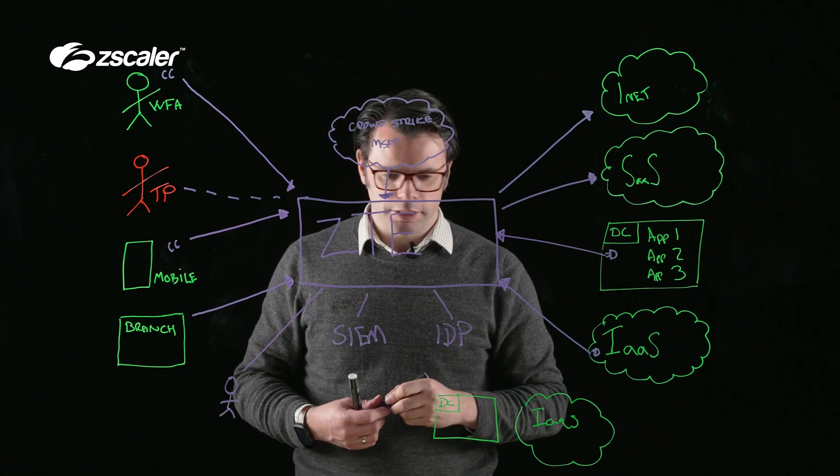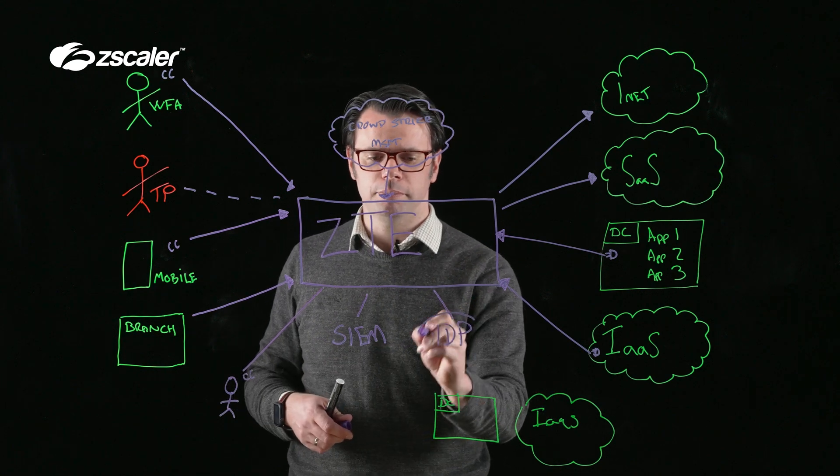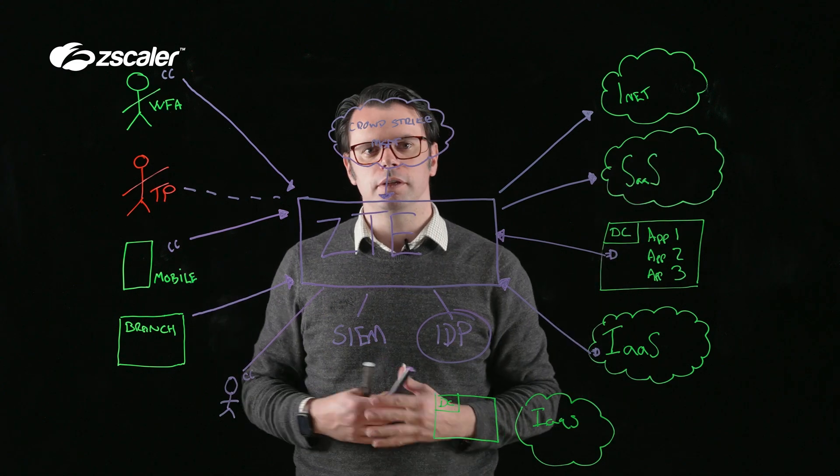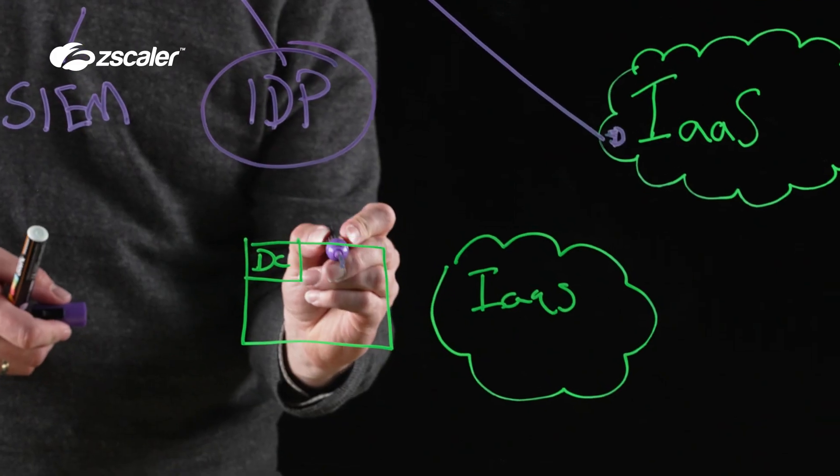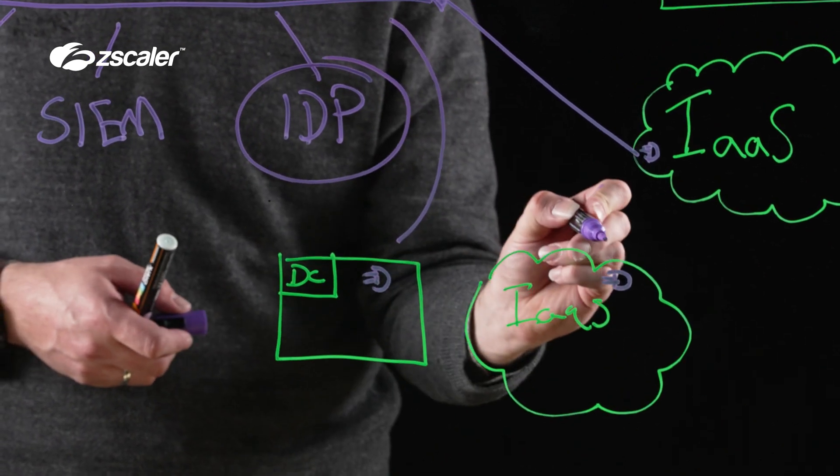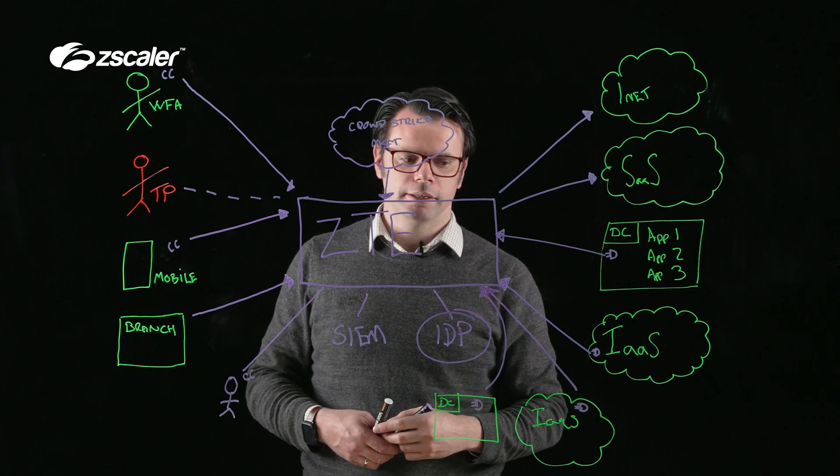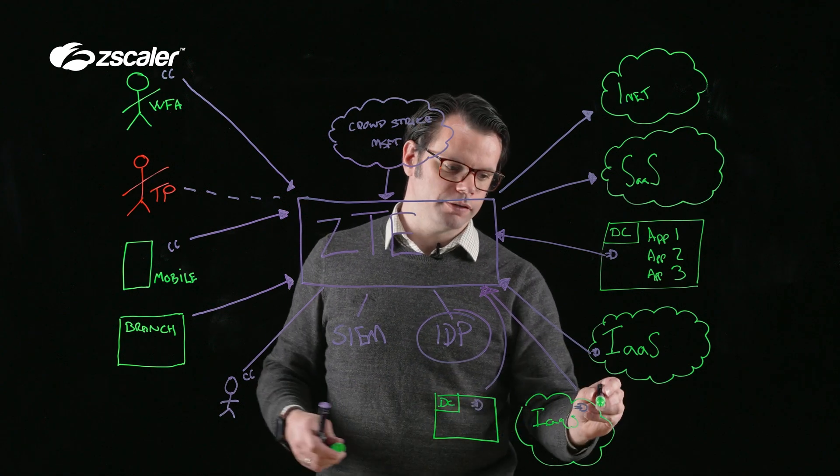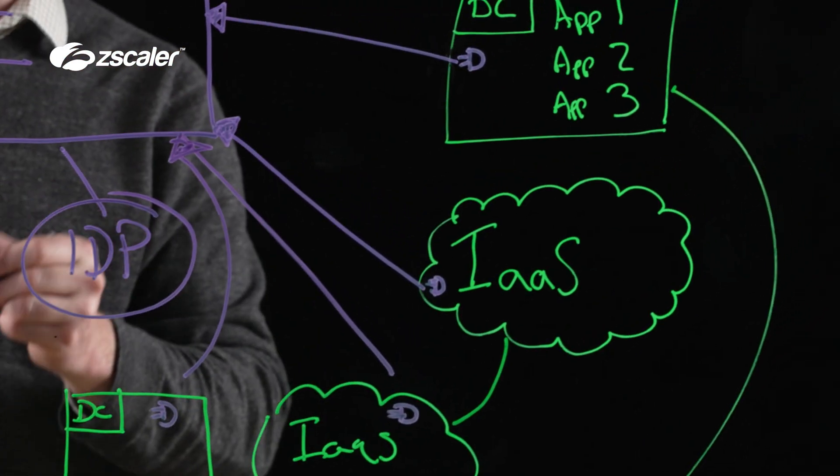What we would be able to do is deploy the client connector to them. They would then be able to integrate with an identity provider, at which point you can present all of your applications to these new users. And again, all we would need to do is present a couple of app connectors within their environment that can speak to the applications you want to present. And you're able to provide that connectivity without the need to have express routes or end-to-end network connectivity to join these environments, because everything will be brokered through the ZTE.